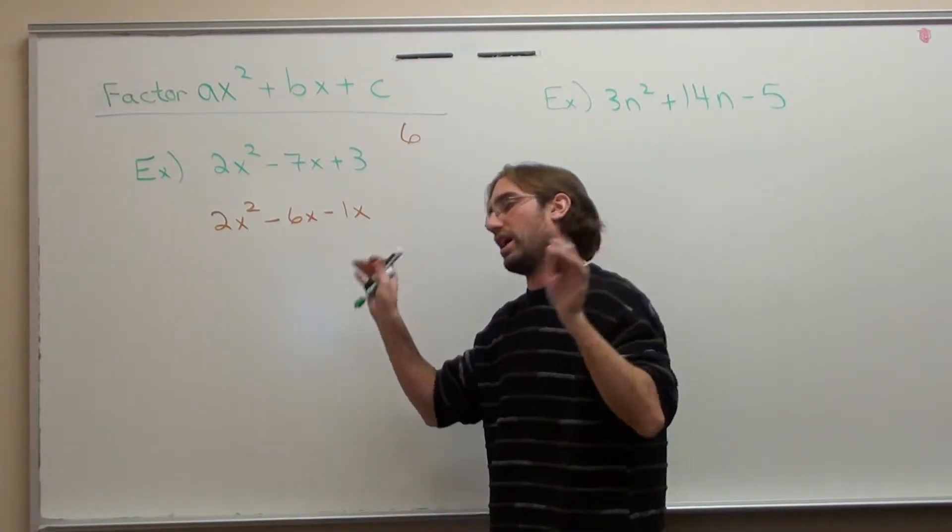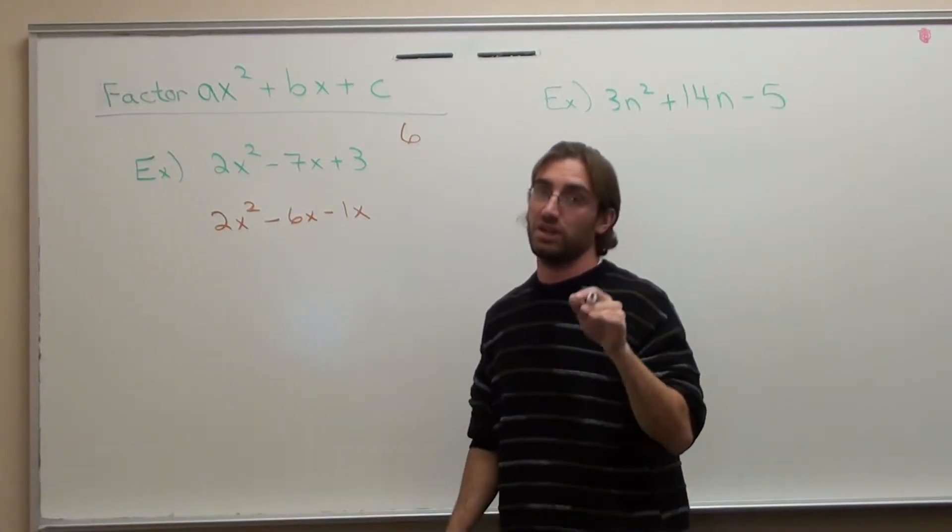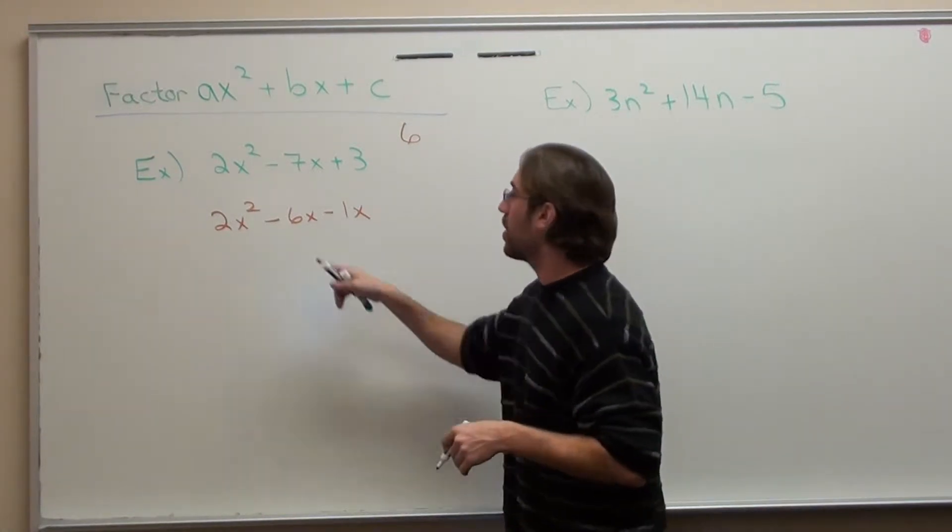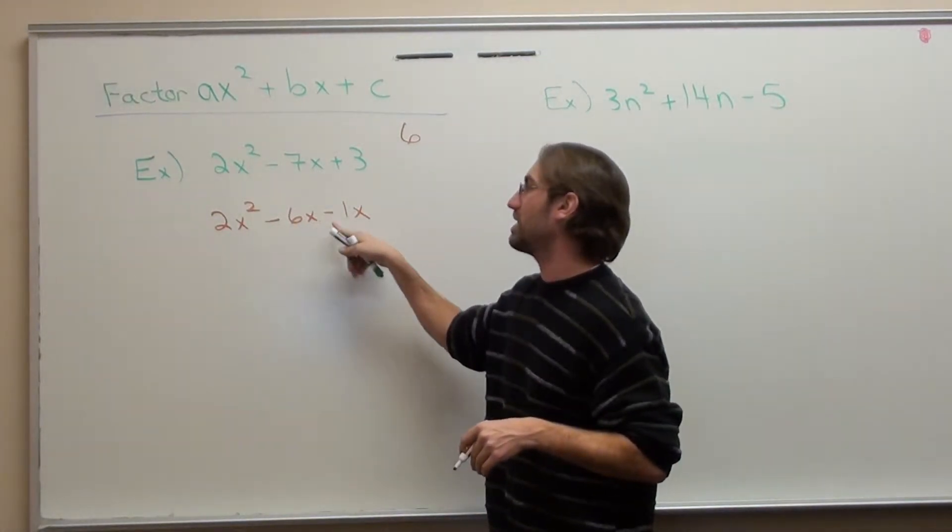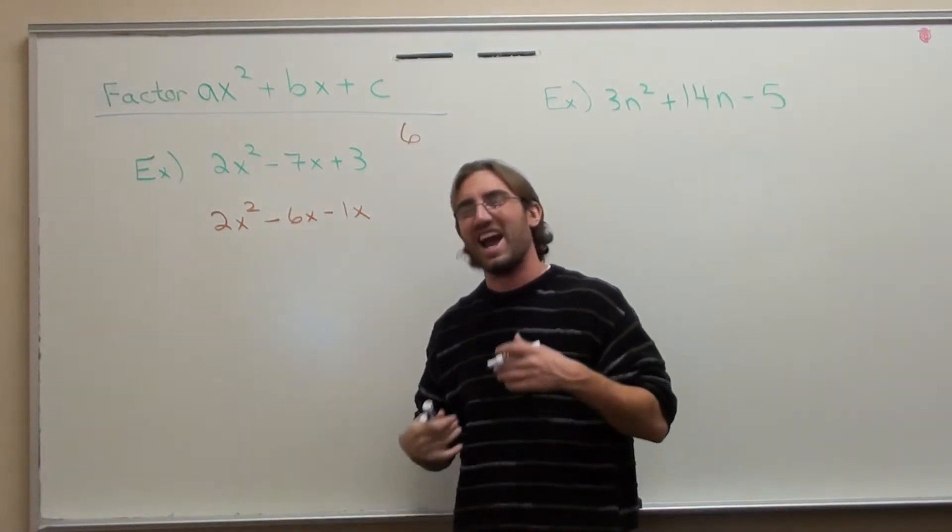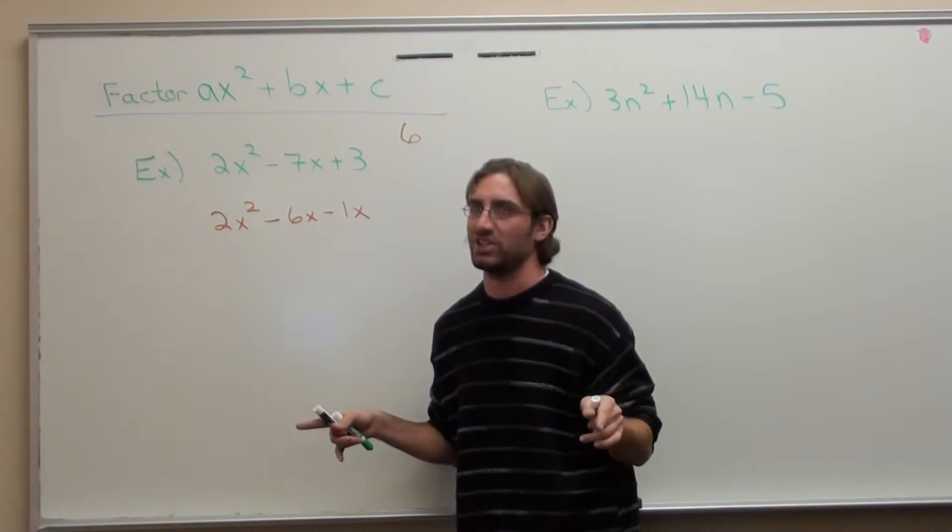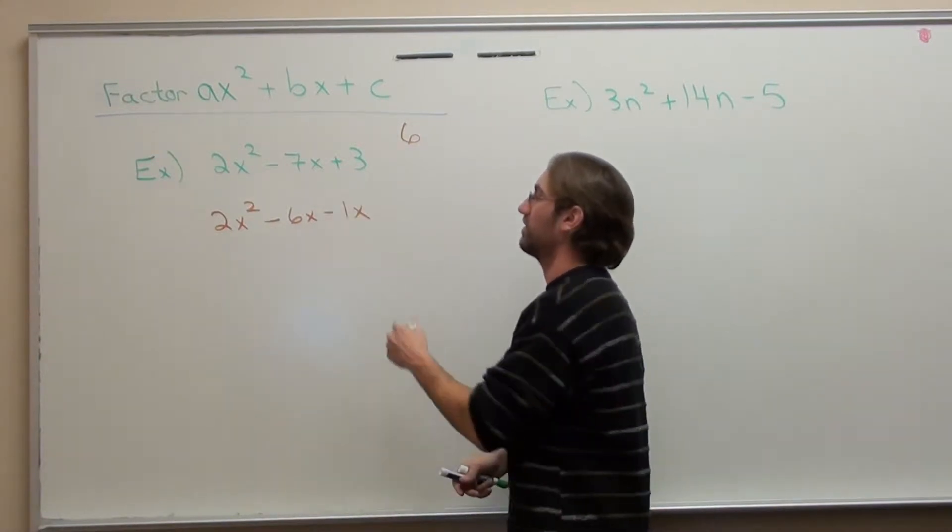Now here's what you've got to do. Pay attention to this step. 2x² is just 2x². I'm going to rewrite the -7x as a grouping type of problem. So we're going to split this -7x into -6x and -1x. Hold on, you are changing everything. No, I'm not. I'm just rewriting it so it's more convenient for me. What's -6x plus -1x? It's -7x. I didn't actually change anything.